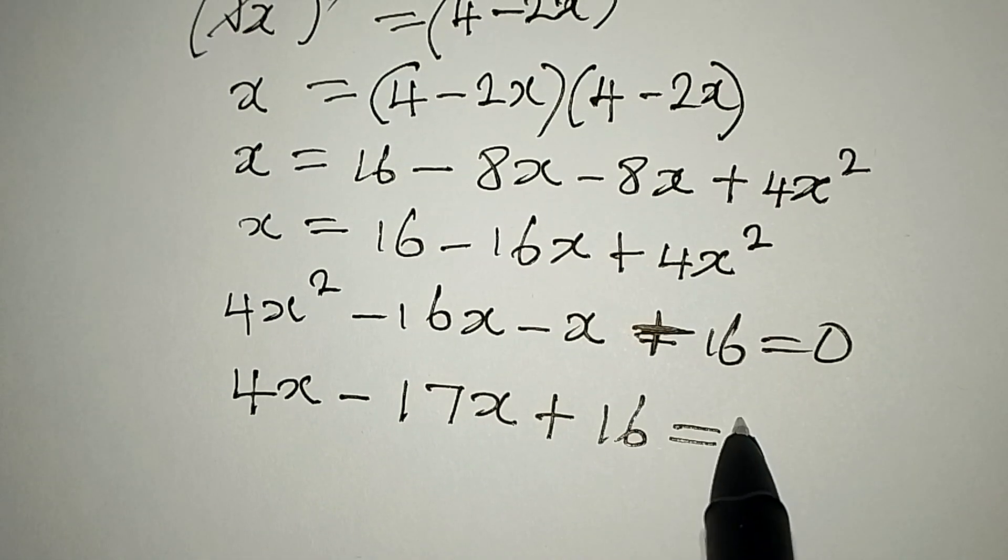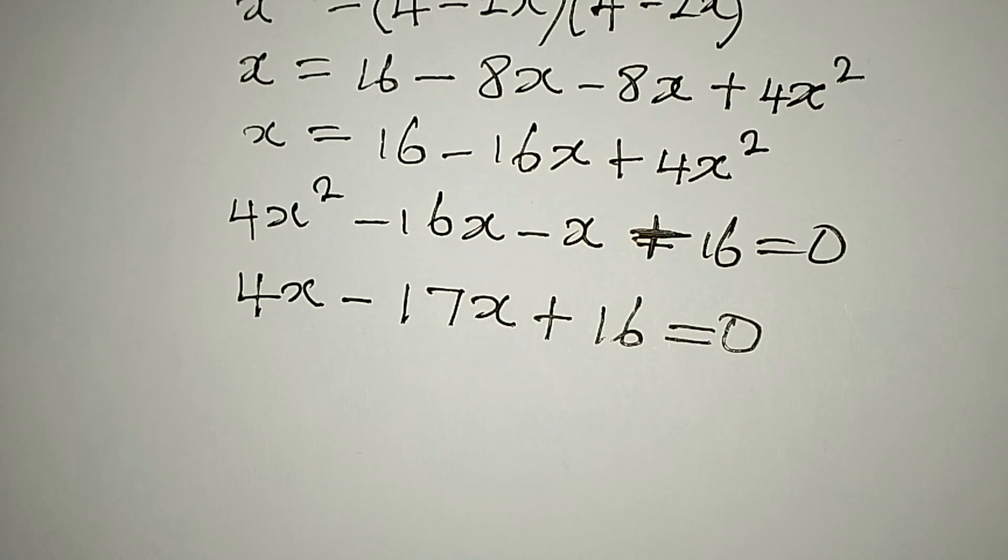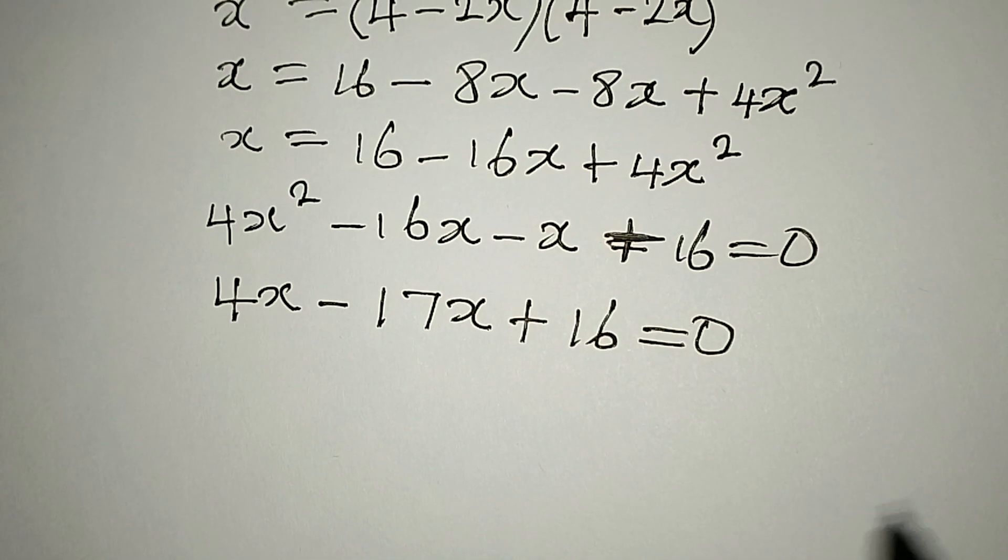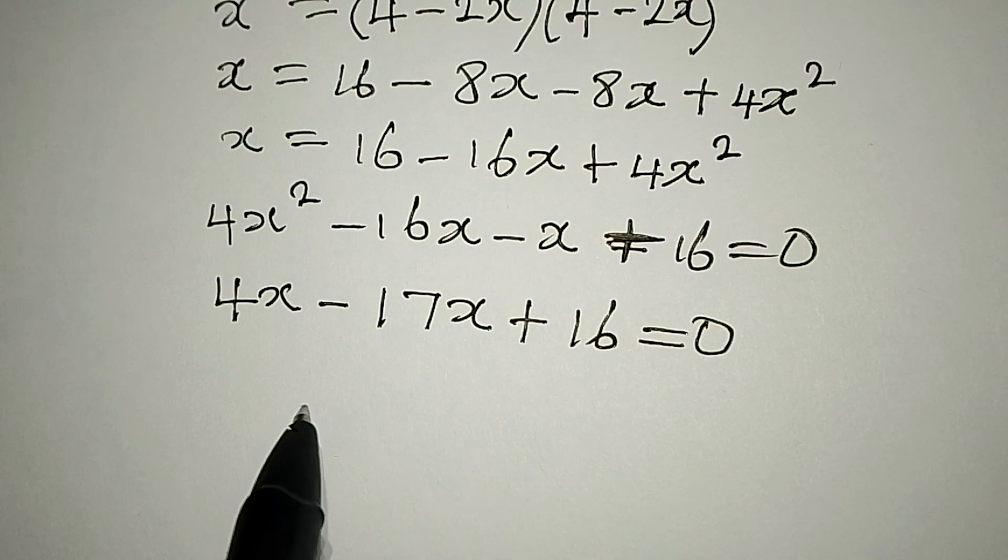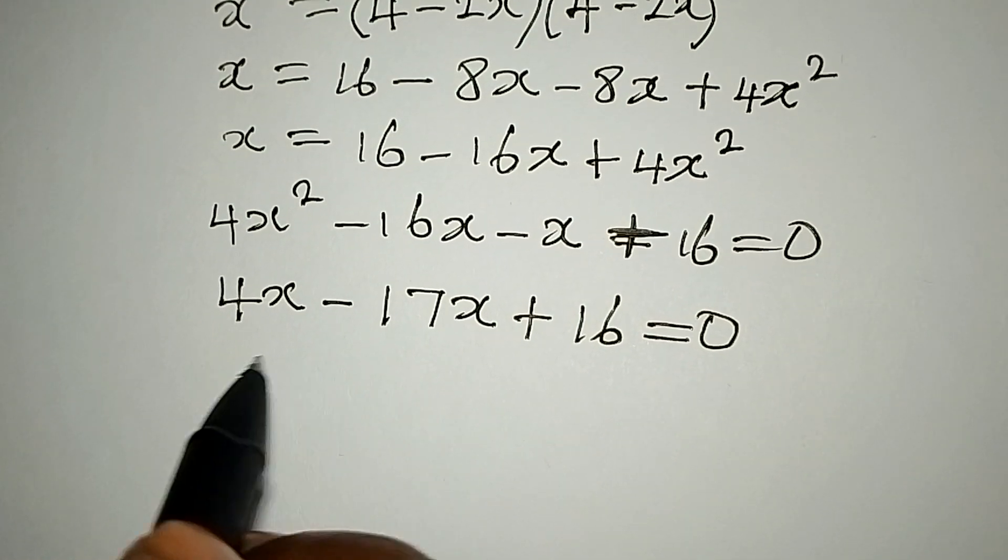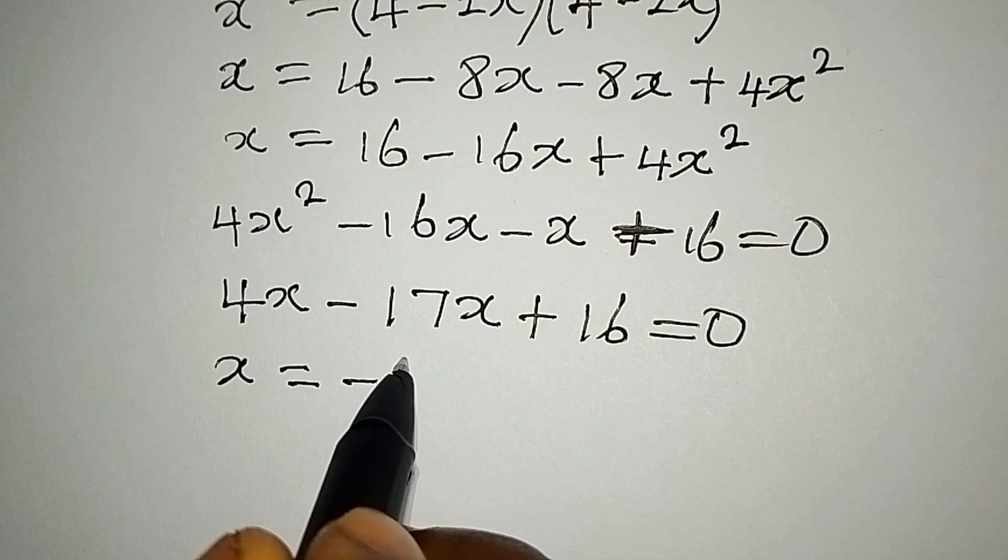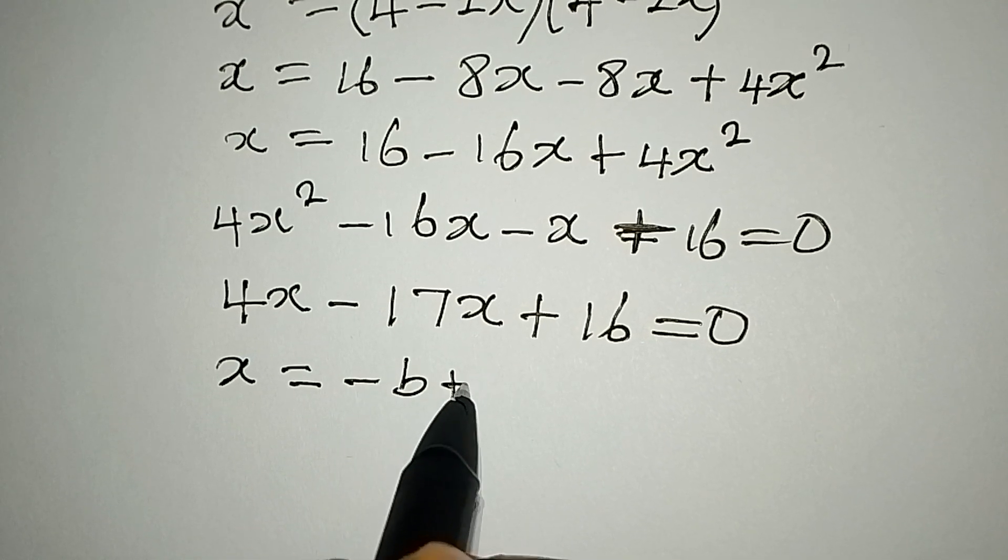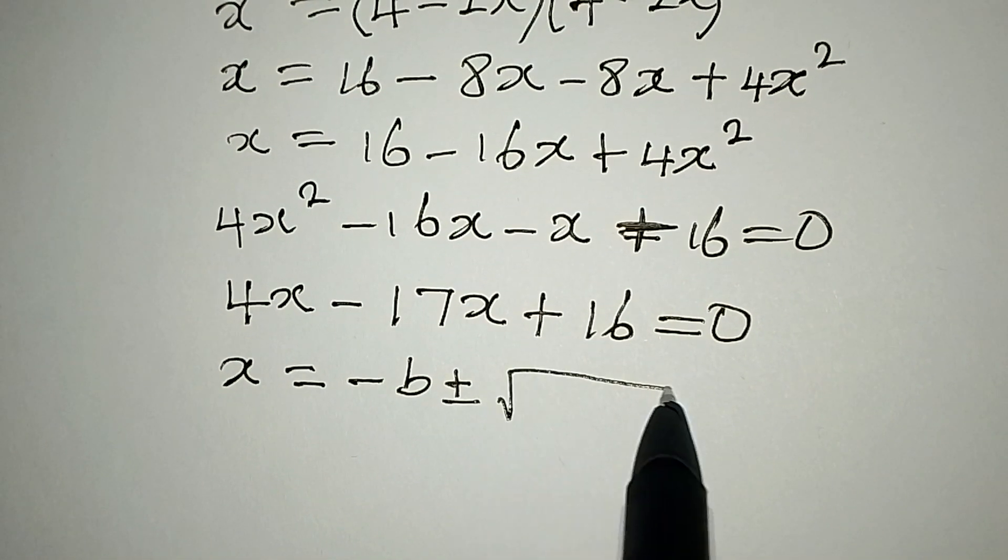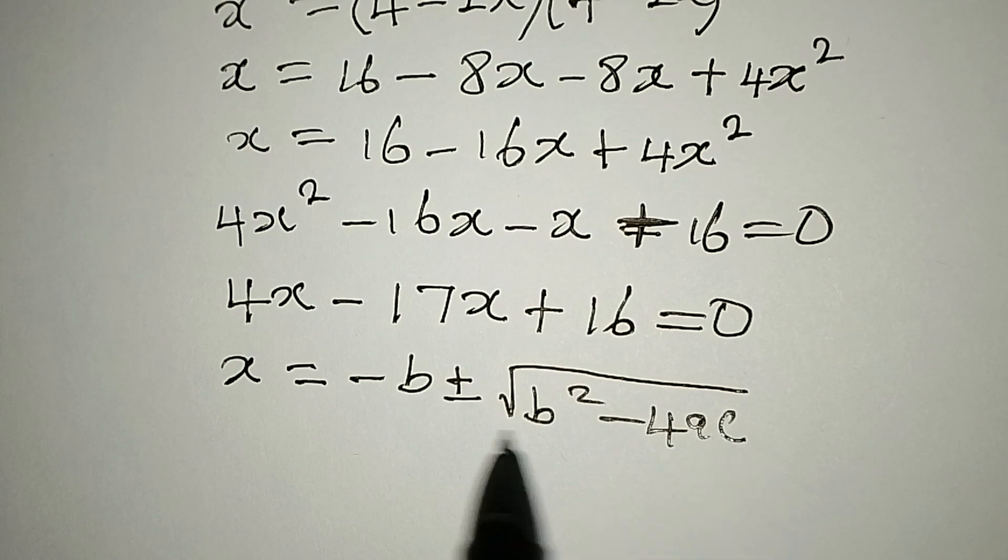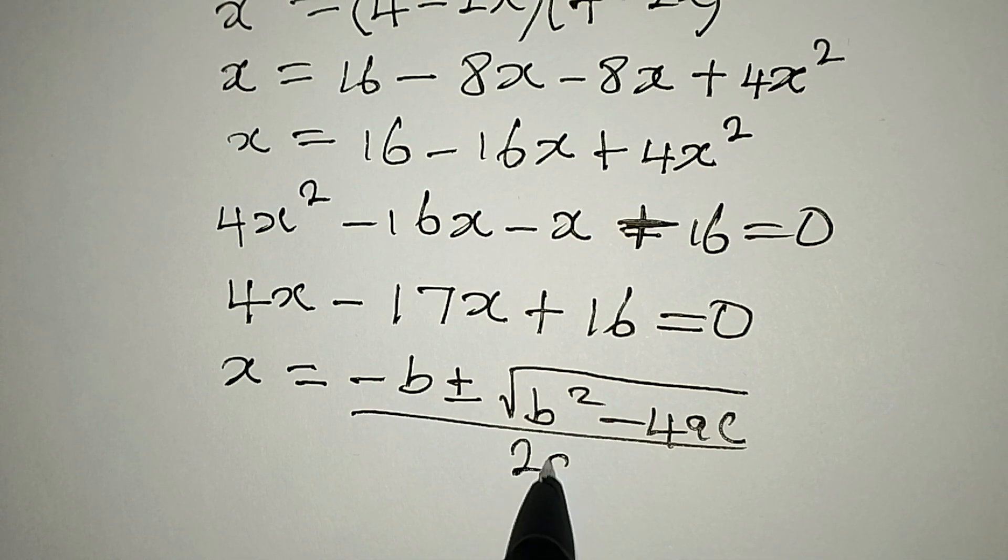Now we have 4x squared minus 17x plus 16 equals zero. So now we have a quadratic equation, and we can solve this by using the formula method. Using the formula, we have x equal to negative b plus or minus square root of b squared minus 4ac, over 2 times a.